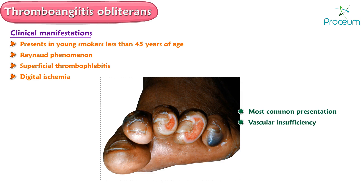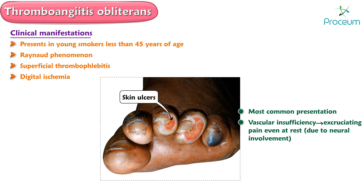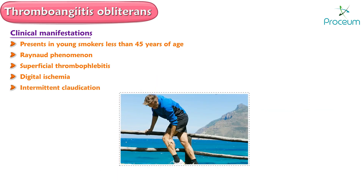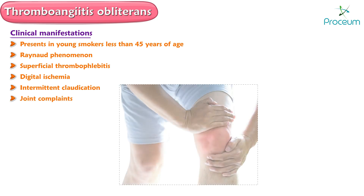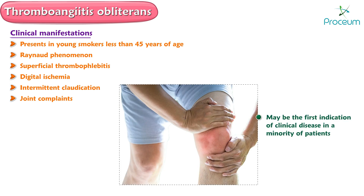Vascular insufficiency can lead to excruciating pain even at rest. Due to neural involvement, skin ulcers and gangrene may be seen. Intermittent claudication — leg pain induced by exercise that is relieved on rest — is also a feature. In a minority of patients, joint complaints may be the first indication of clinical disease.